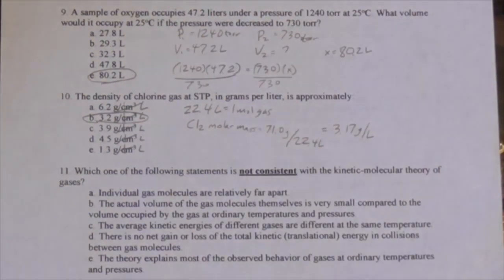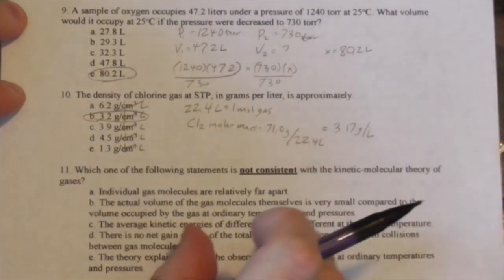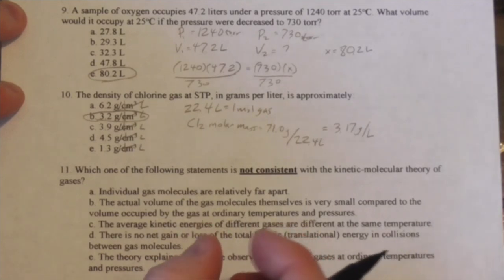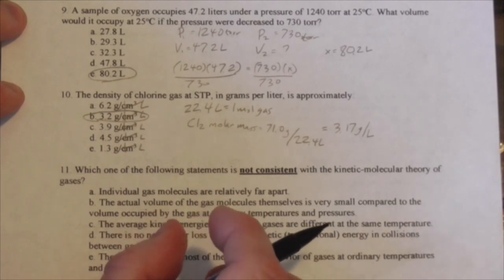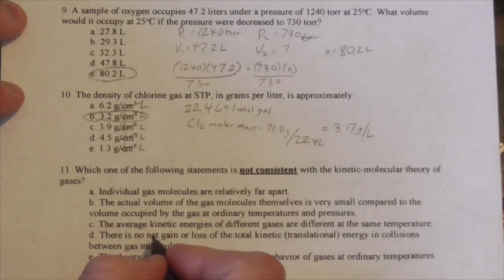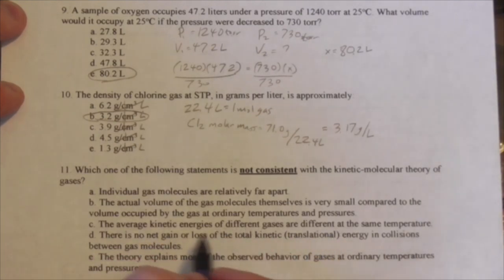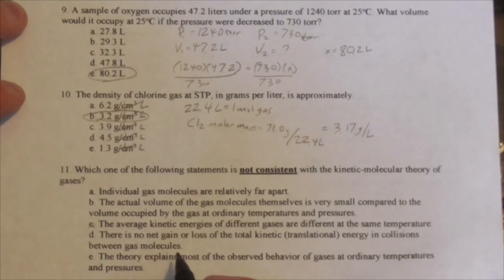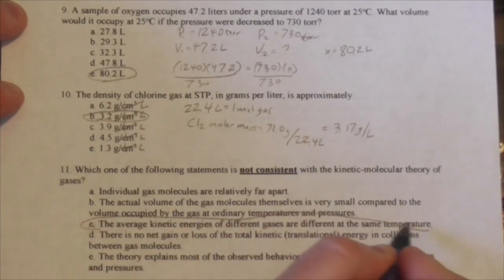Which statement is NOT consistent with kinetic molecular theory? Individual gas molecules are far apart — true. The actual volume of gas molecules is very small compared to the volume occupied by the gas — true. The average kinetic energies of different gases are different at the same temperature — NO, the average kinetic energy must be the same at the same temperature. There is no net gain or loss of kinetic energy in collisions — true. The answer is letter C.